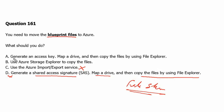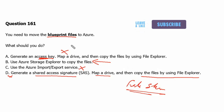Option A is to generate an access key, map a drive, and then copy the files using File Explorer. It is similar to Option D, but the access key will not allow us to access the file share, and file share is not recommended for storing blueprint files. Therefore, we are left with Option B: use Azure Storage Explorer to copy the files, which is the best option available to transfer the blueprint files to Azure.